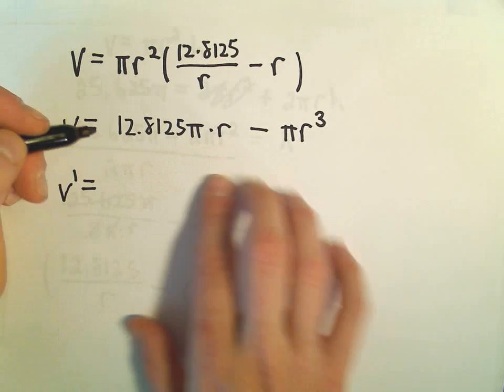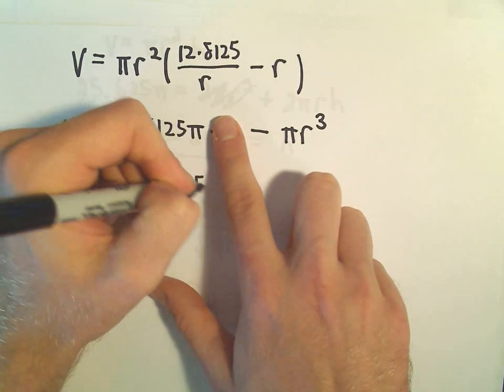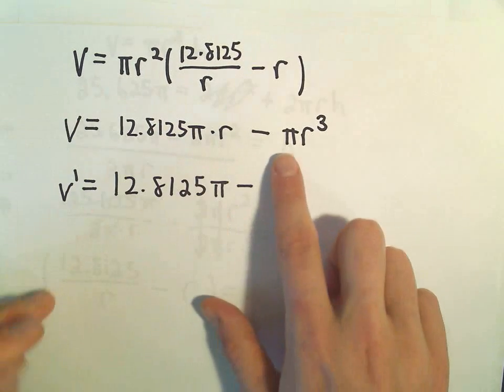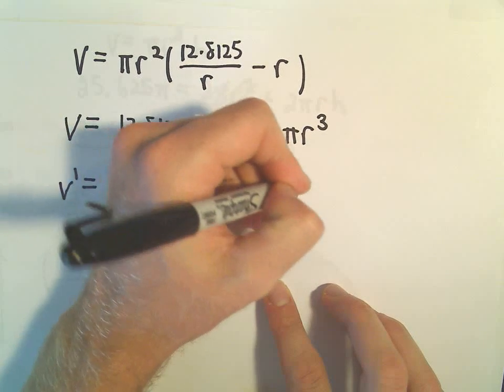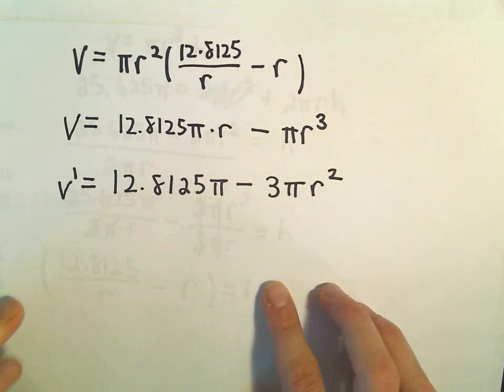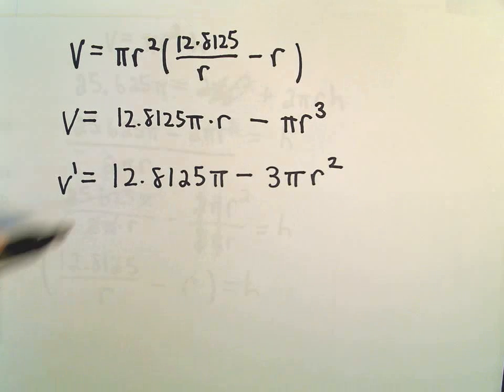When we take the derivative of the first term, the R will just go away. And then when we take the derivative of the second term, we'll get just 3R² multiplied by π. So we'll get 3πR². So for these, we want to figure out where the derivative is 0 or where it's undefined.